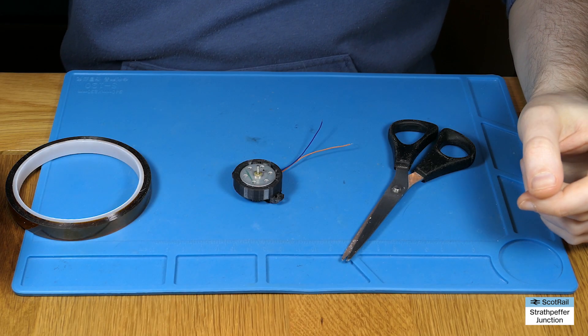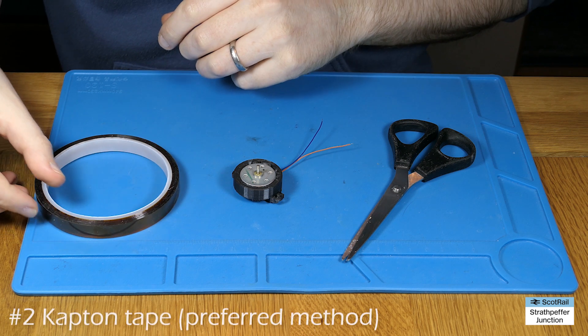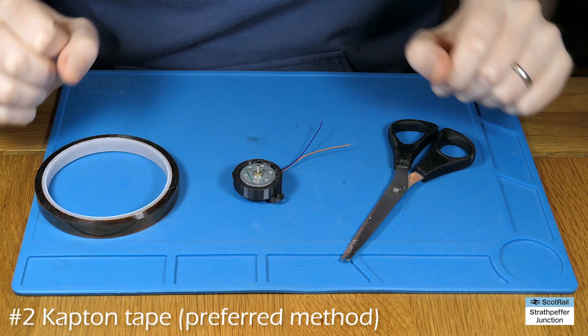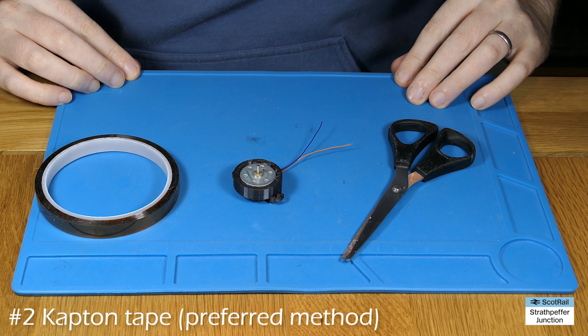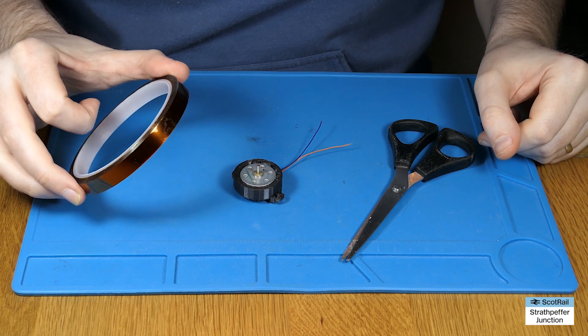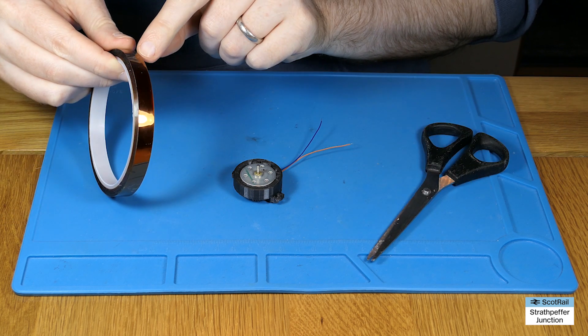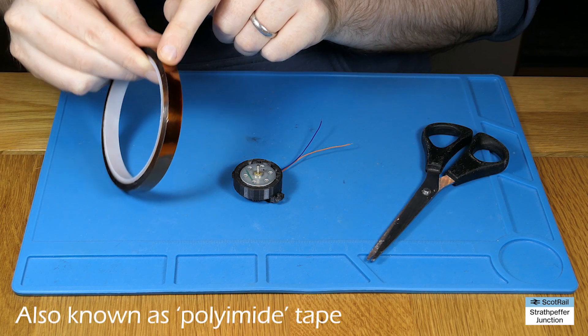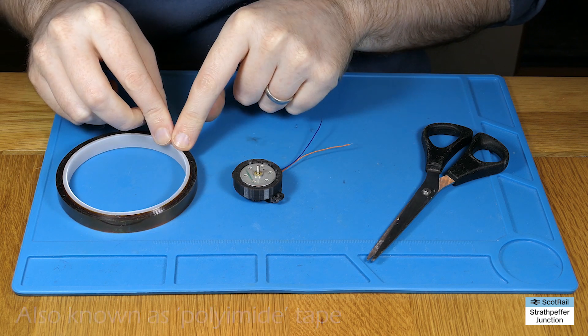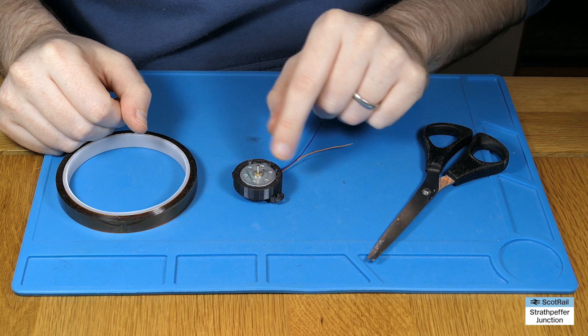Okay, so option two and this is now my preferred option because it is reversible, you can undo it, you can replace the motor if you need in the future without needing to buy a new adapter. So this one uses Kapton tape and a pair of scissors. Now I have bought this Kapton tape, which I think is about 10 mil and the reason I bought this is because it's the same thickness as the motor and it means I'll not need to trim anything.